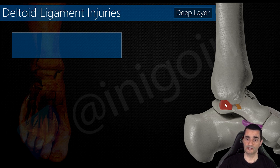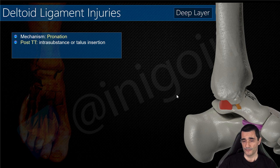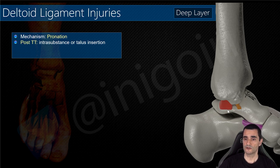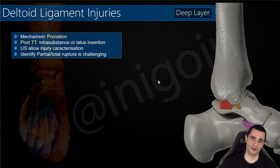We have two layers: the deep layer with the posterior tibiotalar ligament and the anterior tibiotalar ligament. The deep layer is usually affected in pronation, which stresses the talus, and these two components may be affected. The location of the injury is usually in the middle of the ligament or at its talar insertion — it is very uncommon at the tibial insertion. Ultrasound can locate this injury properly, but distinguishing between total or partial rupture may be challenging.